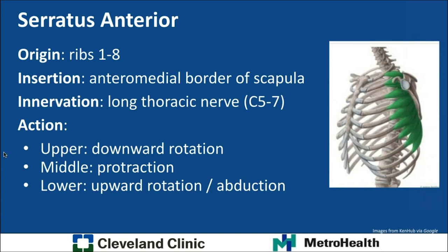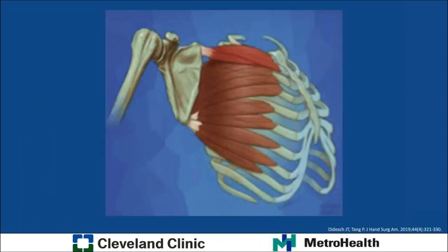The serratus anterior has a very broad origin on ribs one through eight and inserts on the anteromedial border of the scapula. It's innervated by the long thoracic nerve, primarily from C5 and C6, with a little from C7, and a small percentage of people get some innervation from C4. Its action is divided into three parts: the upper part is responsible for downward rotation, the middle segment for protraction of the scapula, and the lower portion for upward rotation and abduction. If you consider the direction of action of these muscles, you can see how the three different heads have slightly different actions on the scapula.